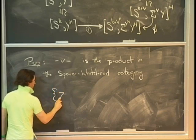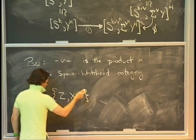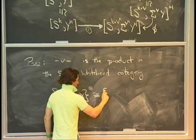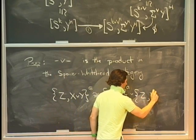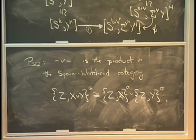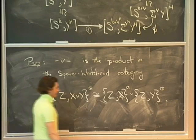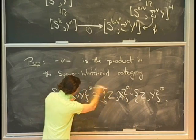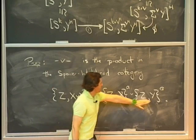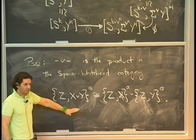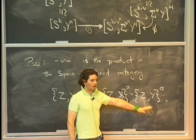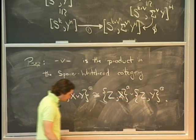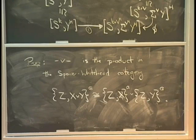In other words, stable homotopy classes of maps into the wedge of two spaces is the same as a pair of maps, one into each of the spaces. If you trace through the argument, when I analyze what's happening, I choose a representative and choose my sphere mapping into things to be big enough. At the end of the day I'm comparing the Nth suspension of X wedge the Nth suspension of Y with the Nth suspension of X cross the Nth suspension of Y, and my connectivity argument works — mutatis mutandis.